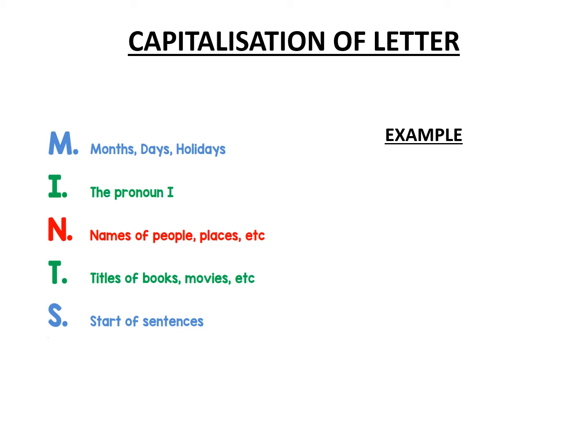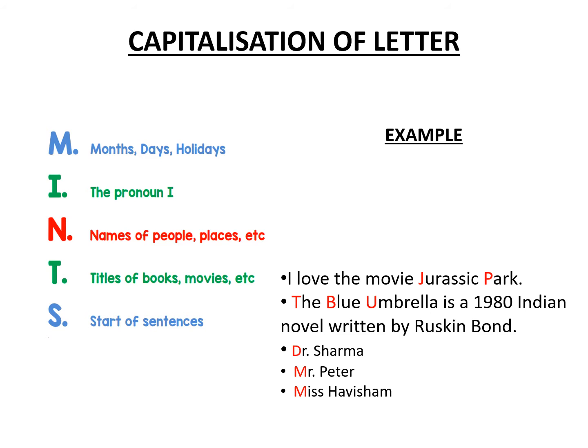T stands for titles. Now titles could be of books, movies, or even people. For example, 'I love the movie Jurassic Park' — Jurassic Park is a movie and the name starts with a capital letter. Similarly, The Blue Umbrella is a 1980 Indian novel written by Ruskin Bond — the name of the book again starts with capital letters. When I say titles of people, the title means Mr., Miss, Mrs., Master, or even Doctor. Whenever you begin someone's name, we always start with a title, and those titles have to start with a capital letter.